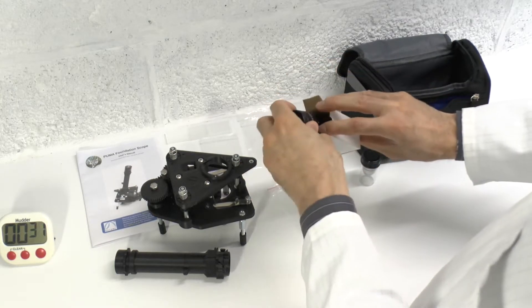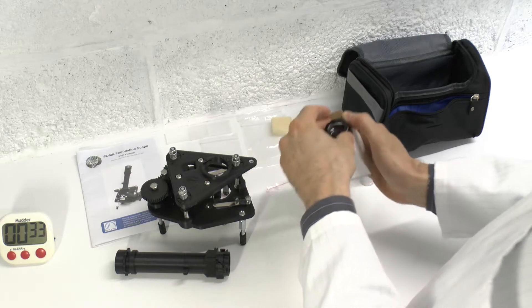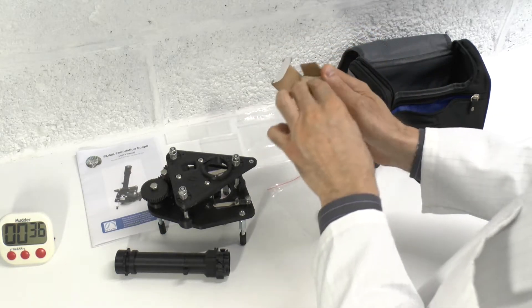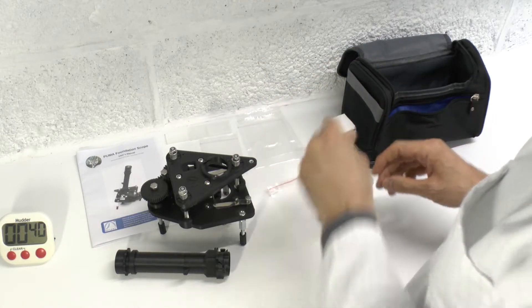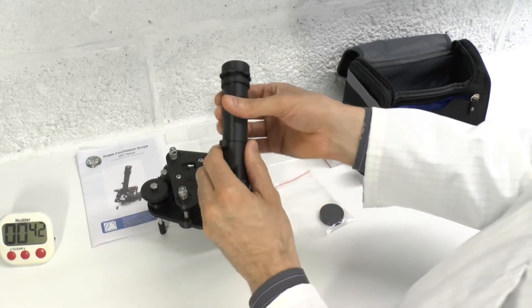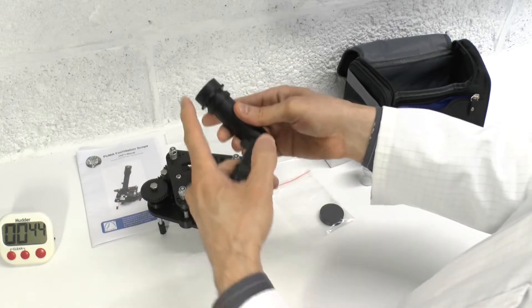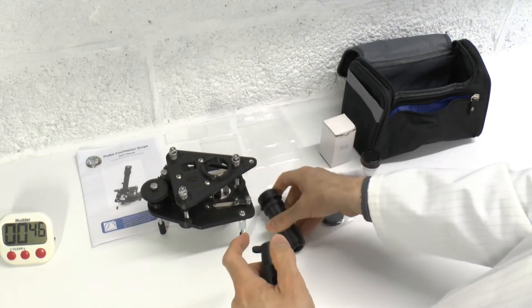The objective, now the ocular, like so. Now, unscrew the ocular head from the filter block. There's no need to remove the ocular holder.